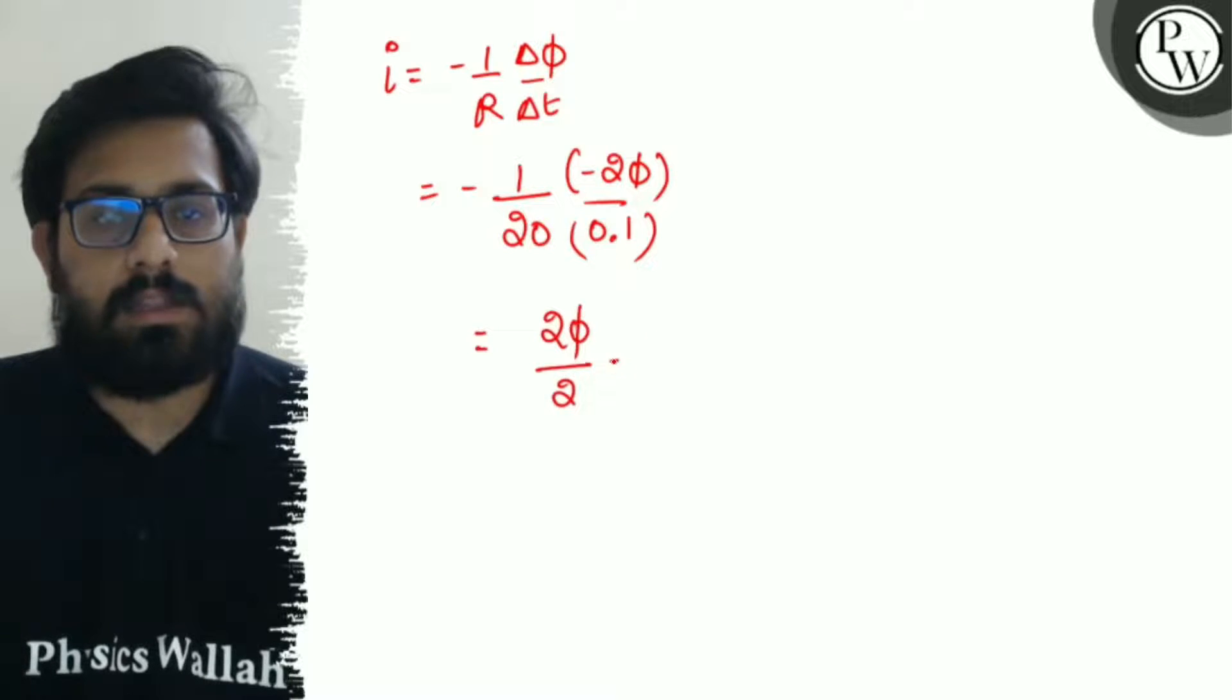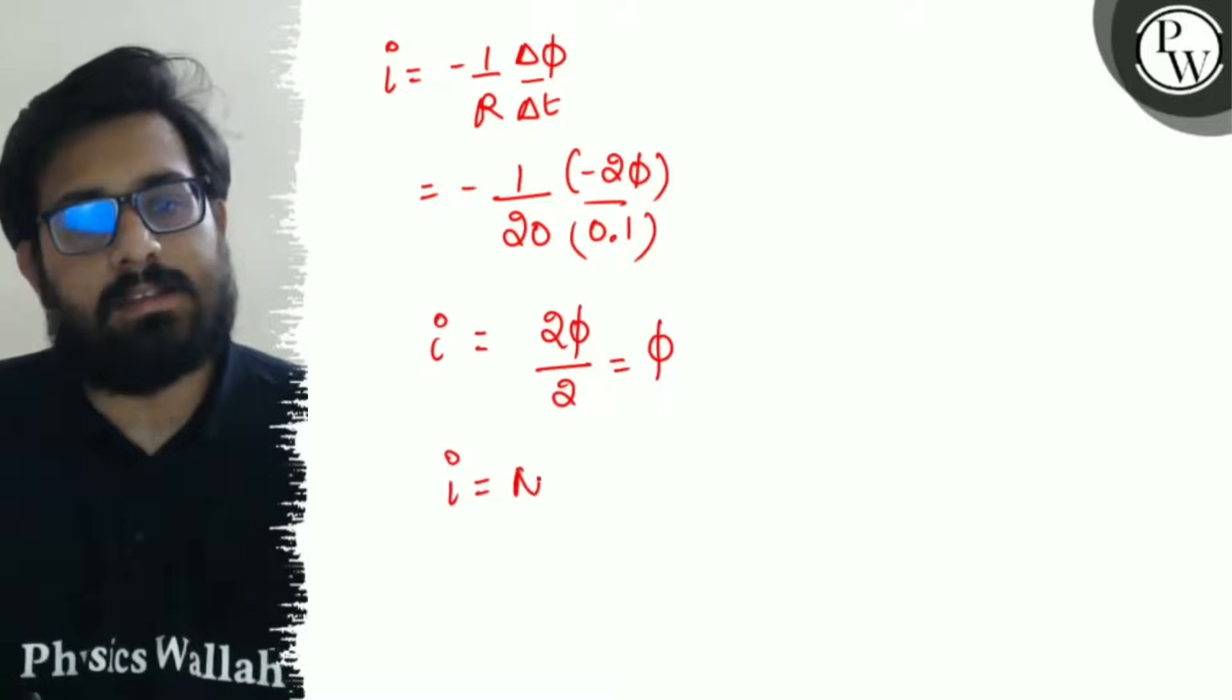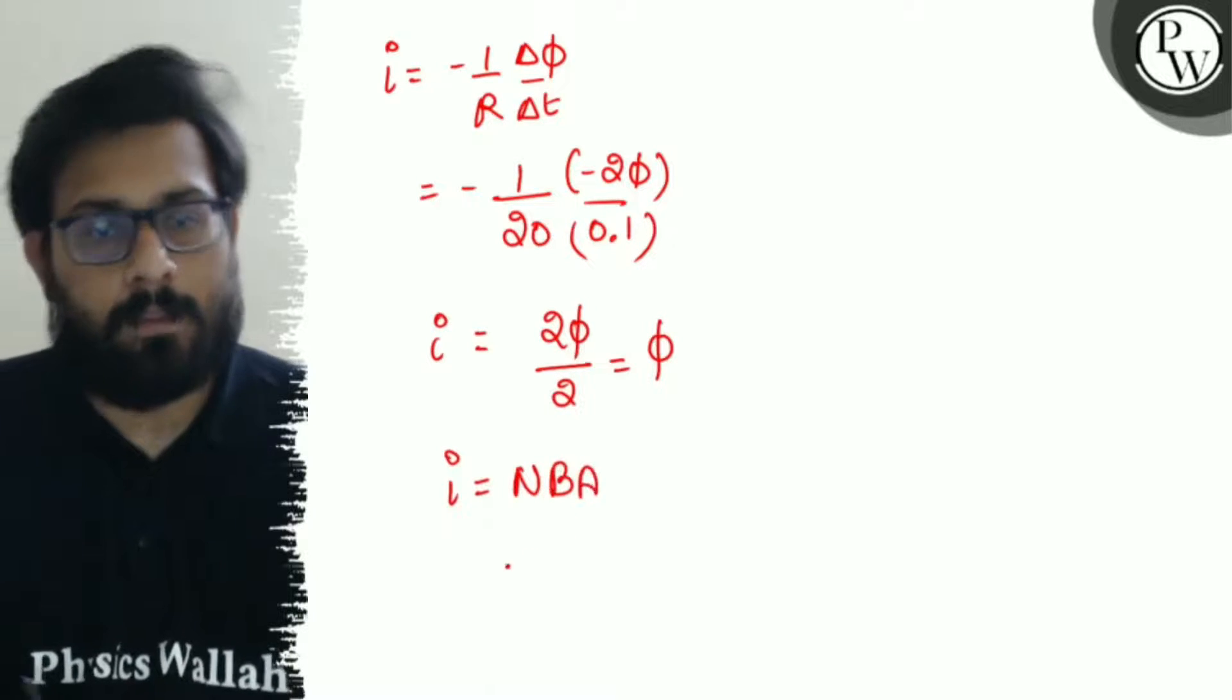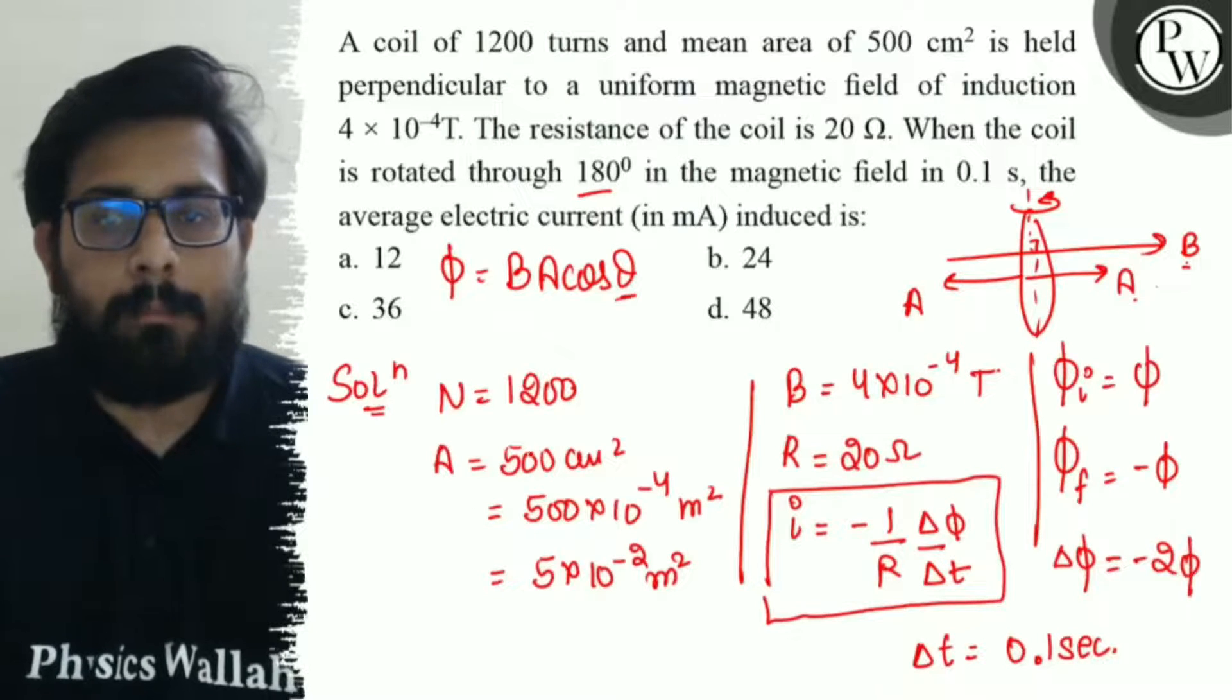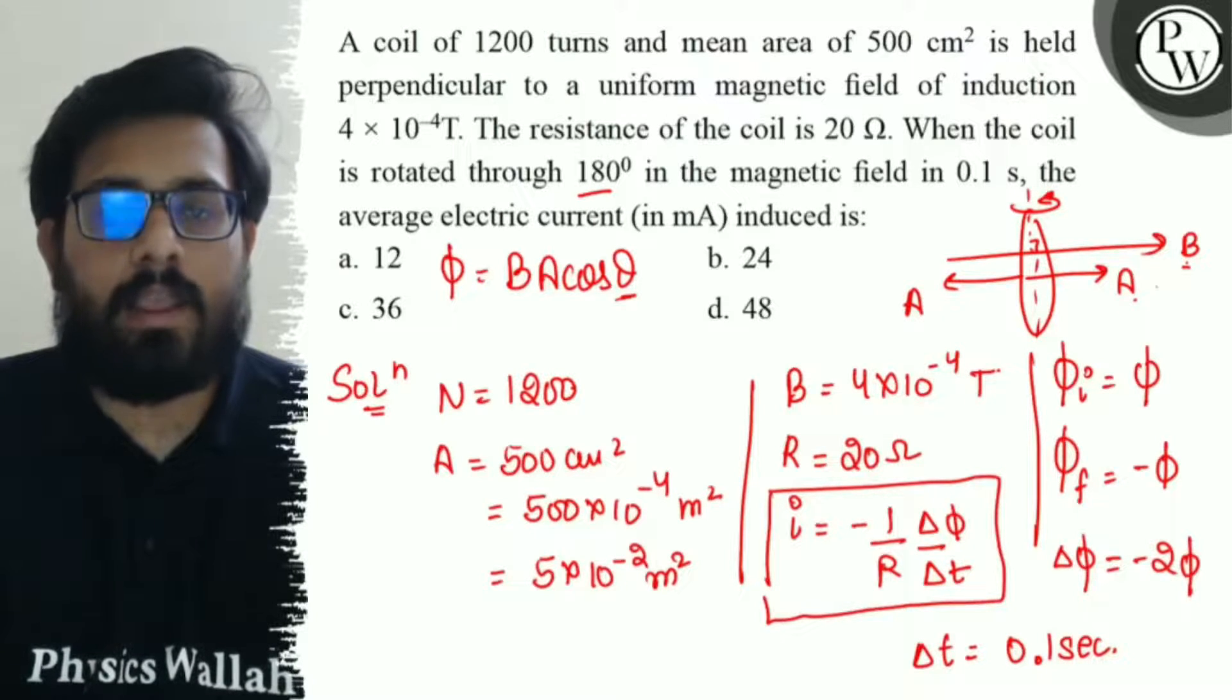Solving it for the value of i: Φ = NBA, right? So number of turns is given as 1200, B is given as 4×10⁻⁴, and A is given as 5×10⁻².